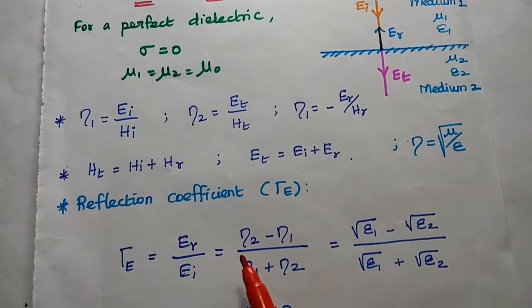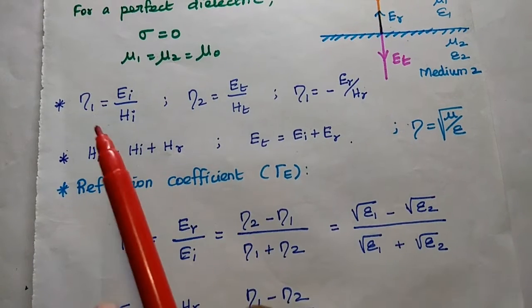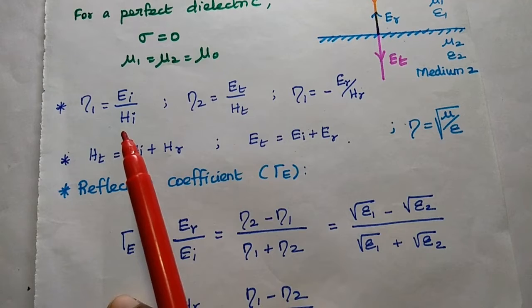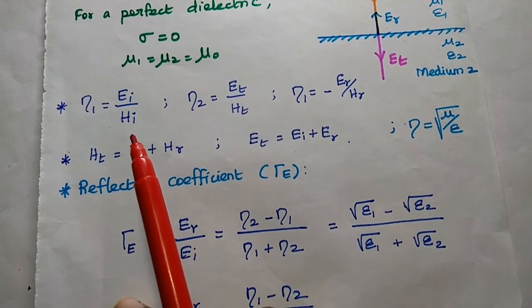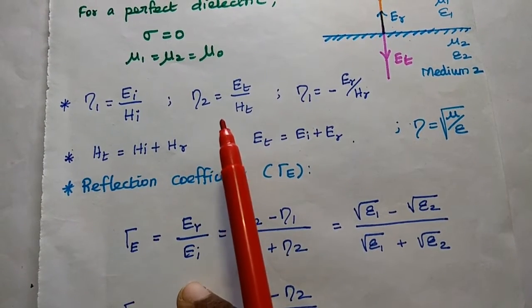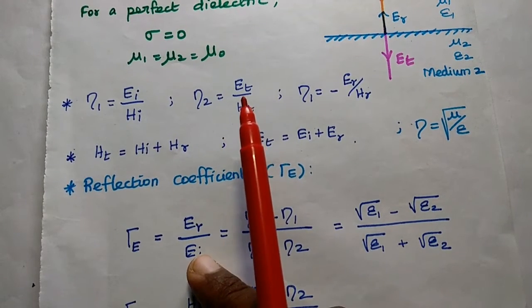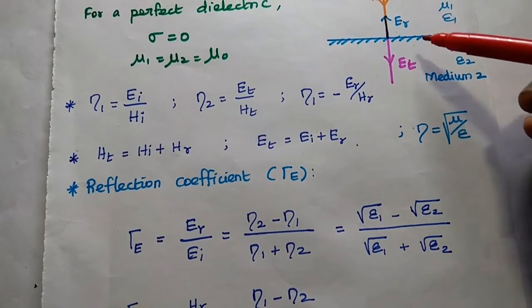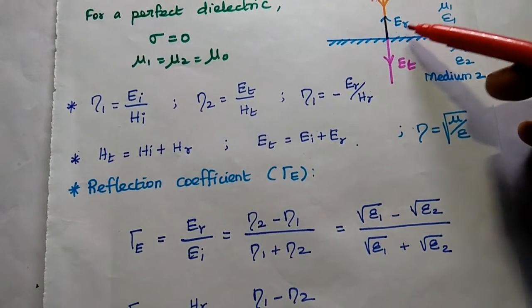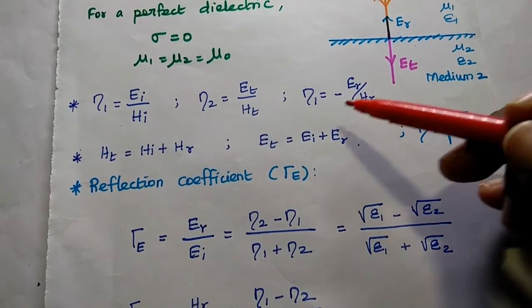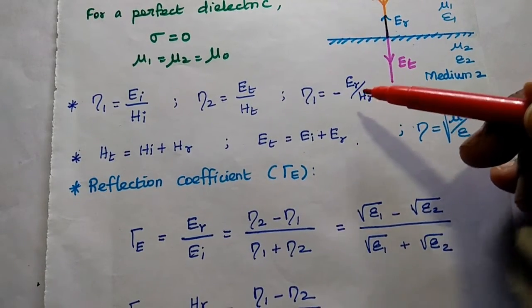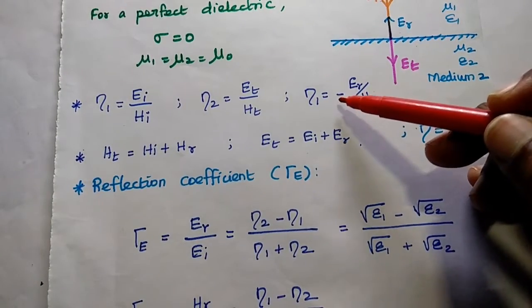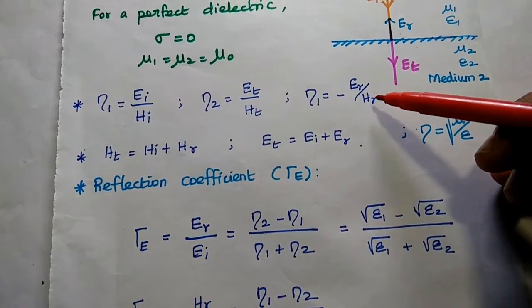Next, the intrinsic impedance. For the first medium, eta 1 is equal to the ratio of incident electric field to the magnetic field. For the second medium, eta 2 is equal to transmitted electric field to the transmitted magnetic field. There is one more wave — the reflected electric field. So here we can have eta 1 with a negative sign, which represents the reflected wave. So eta 1 is equal to minus Er by Hr.